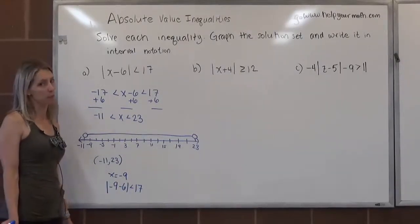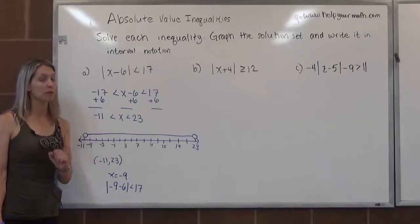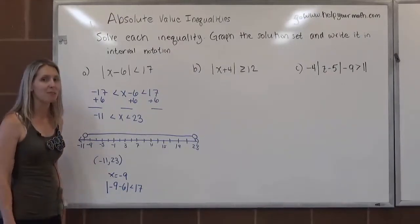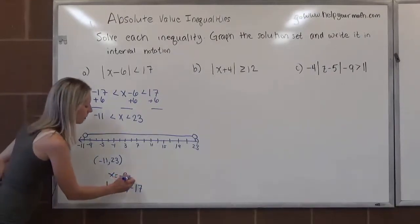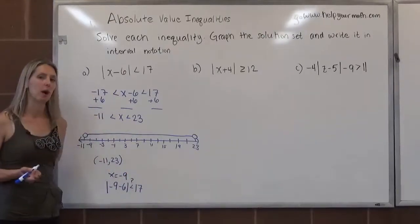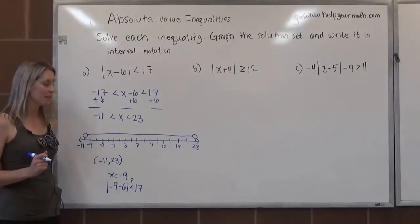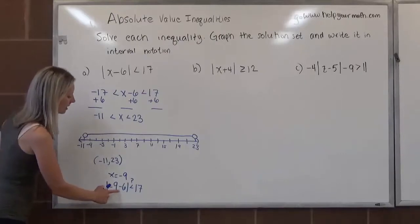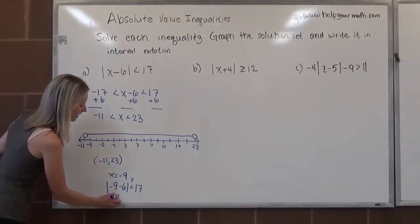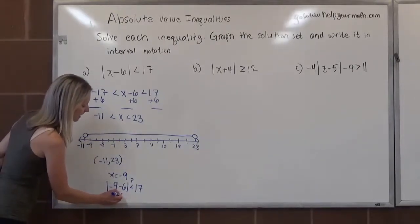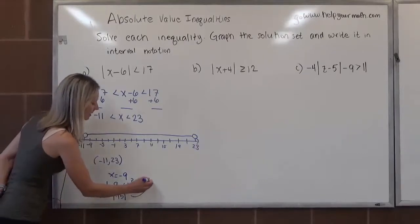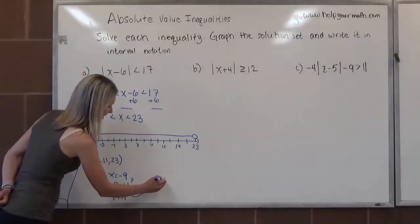If you are doing a test point or checking your solution, you should never be super confident. We just want to be mathematically accurate here. So because we're not positive, we put a question mark over the inequality. Is it really less than 17? Let's find out. Negative 9 minus 6 is negative 15. The absolute value of negative 15 is 15. So we end up with 15 is less than 17.